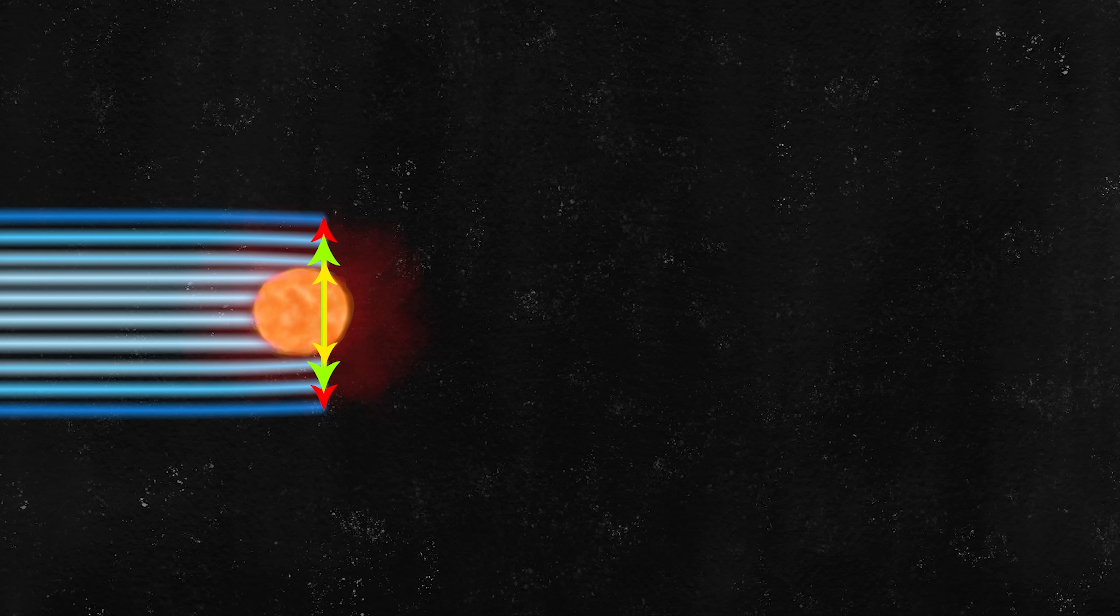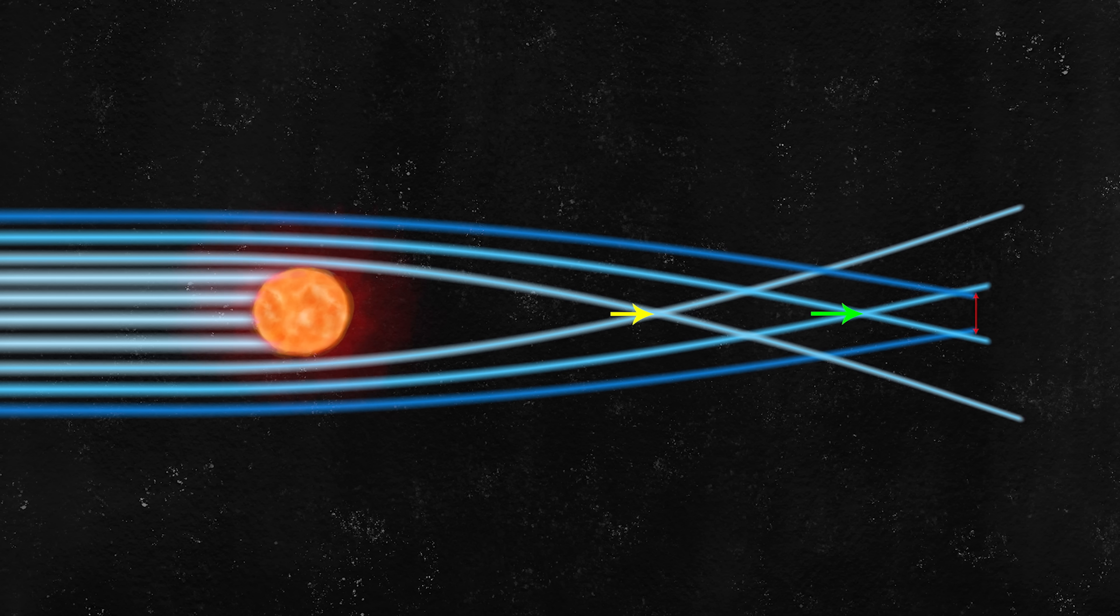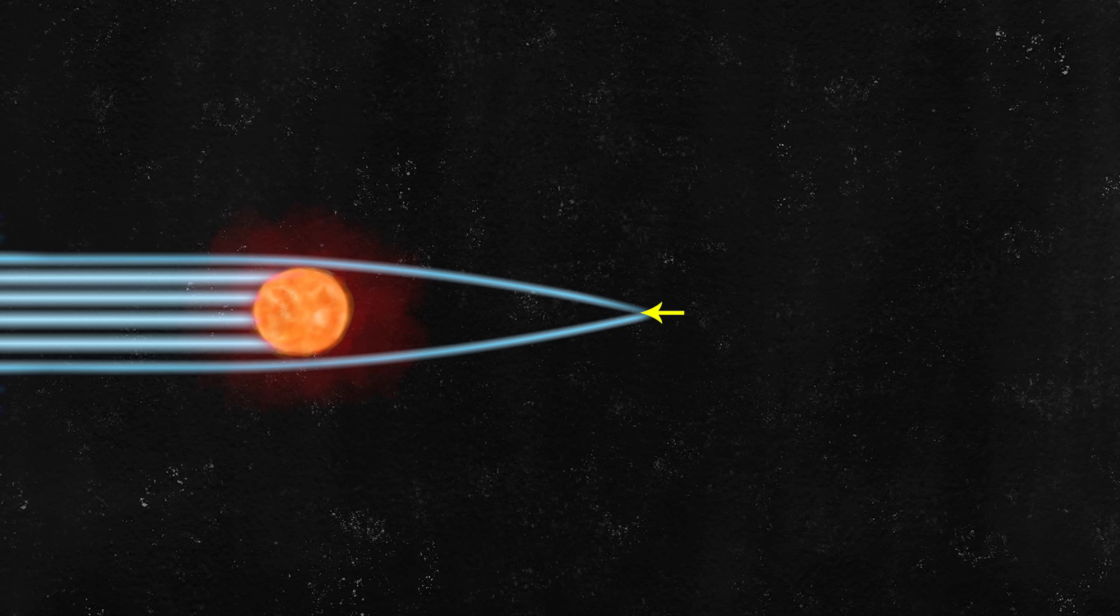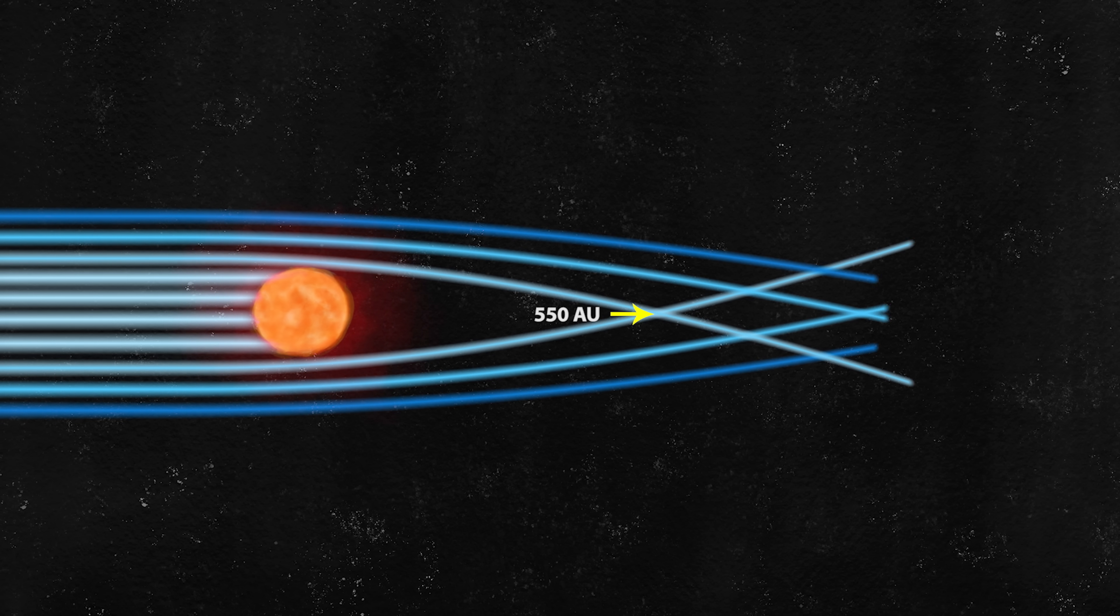Approaching light rays further from the sun are not curved as much as light rays closer to it, so they come into focus past 550 AU, which results in a focus line rather than a single focus point. This is the solar gravitational lens.